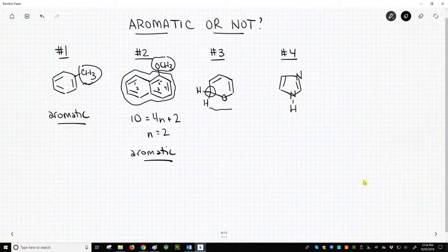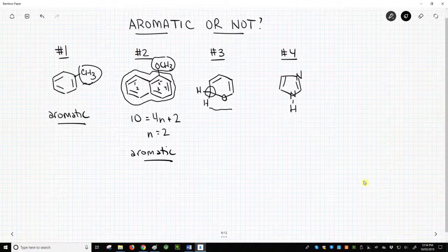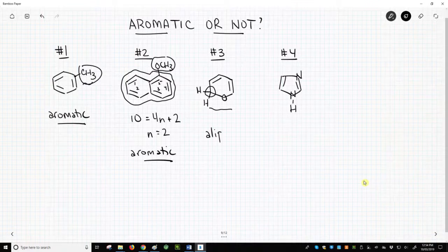Therefore, every atom in the ring does not have a p orbital. Regardless of whether the other criteria are satisfied, this molecule is not aromatic. It is aliphatic.